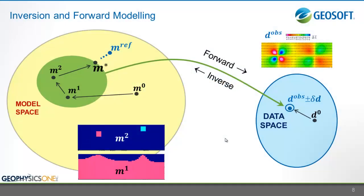This diagram shows a generalized schematic of the inversion process. We have some observed data, and we seek to solve for the model that yields the observed geophysical response. As we proceed through the inversion, we note that non-uniqueness yields a class of models that fit the data. Here is one such example of non-uniqueness — both these inversion results, the shallow prisms and the basement topography, fit the observed data shown here.